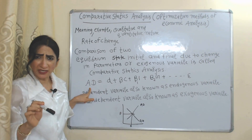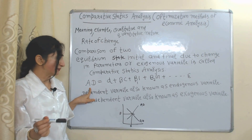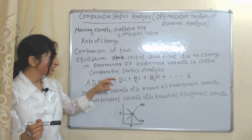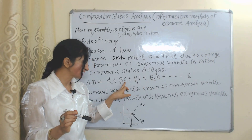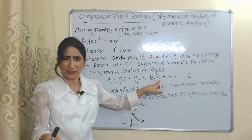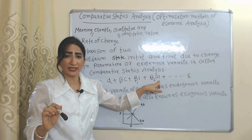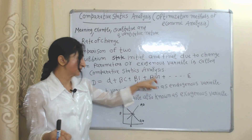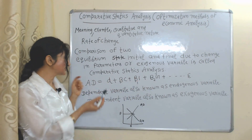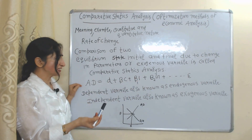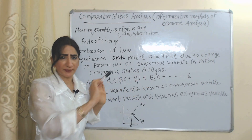Aggregate demand is the dependent variable, also known as the endogenous variable. Aggregate demand depends on consumption, investment, and government expenditure — these are the independent variables, also known as exogenous variables. Beta, beta 1, and beta 2 are parameters.